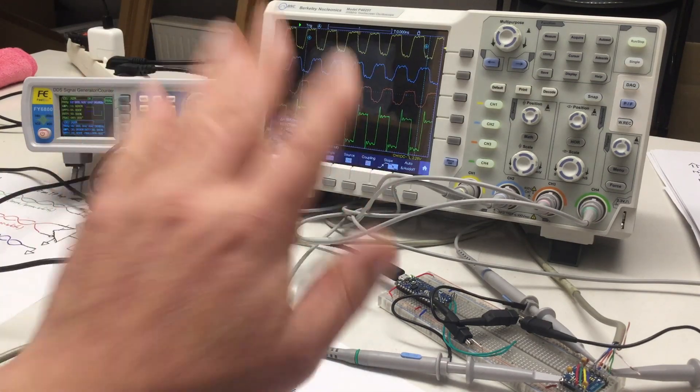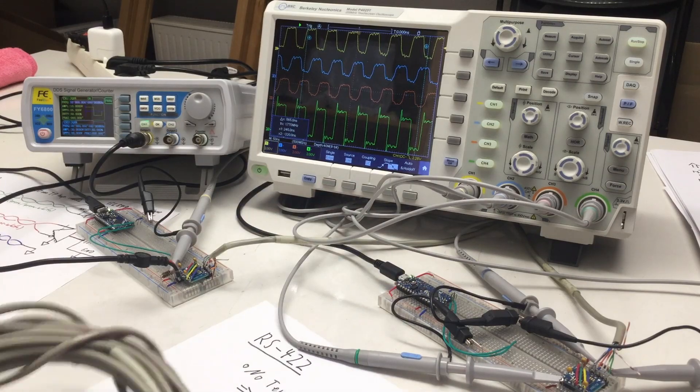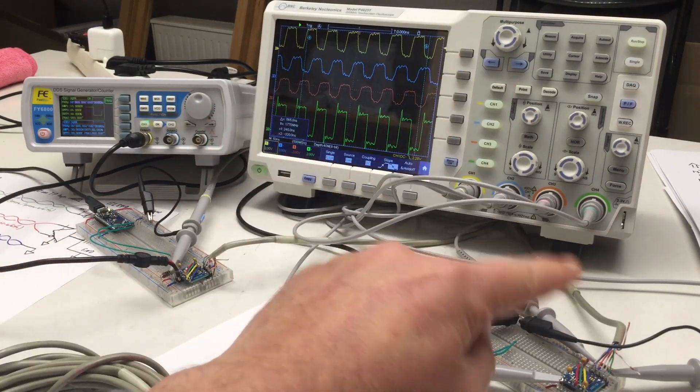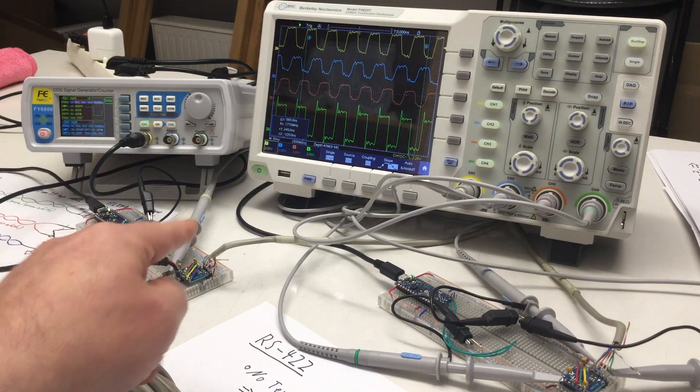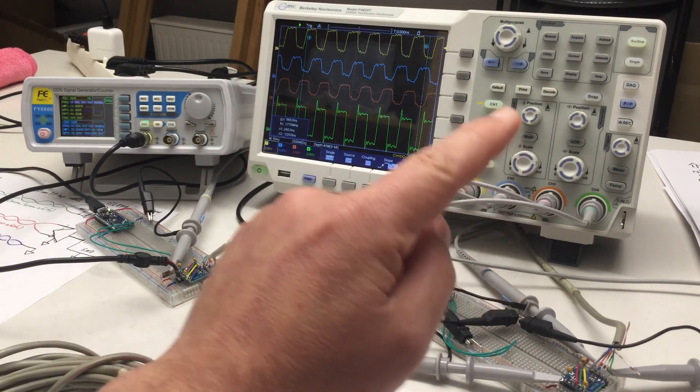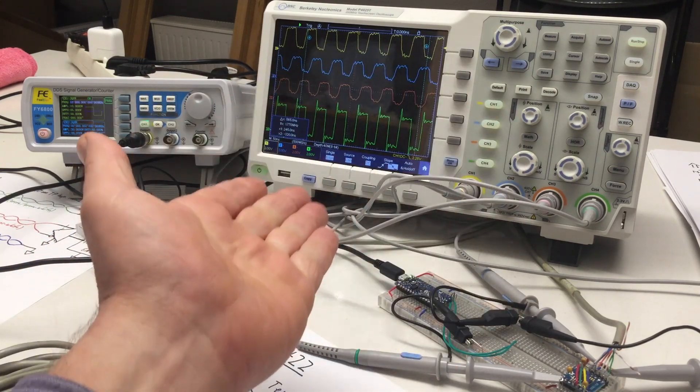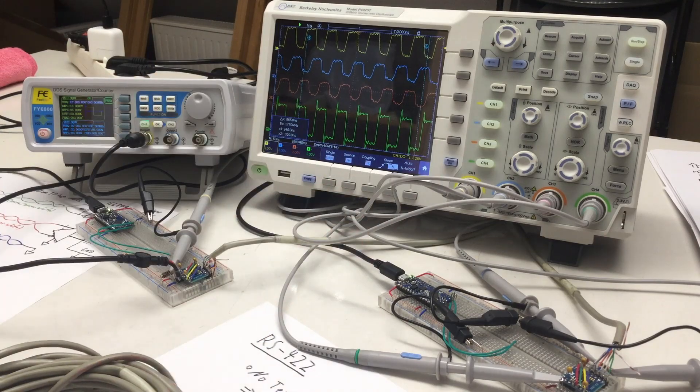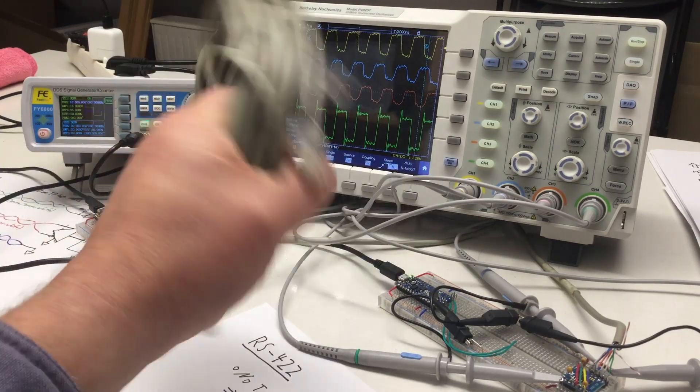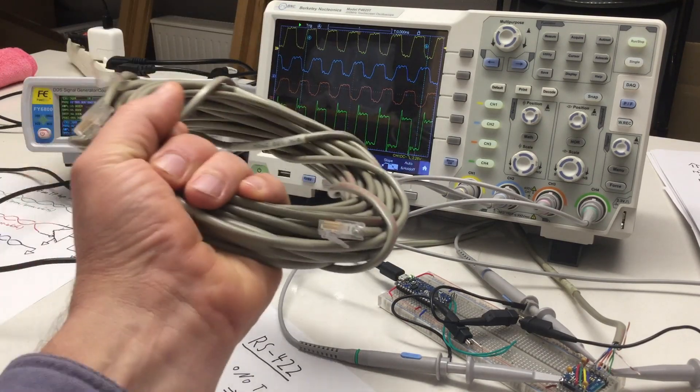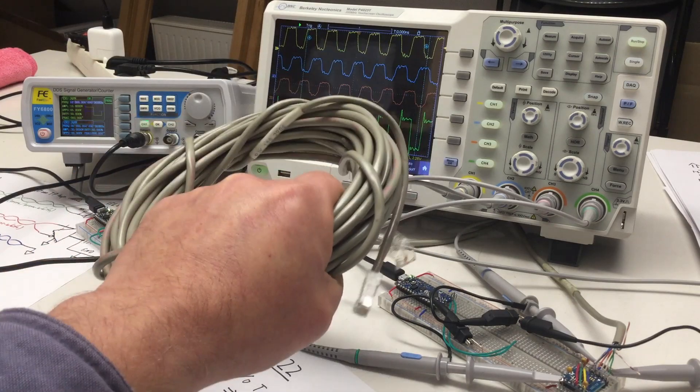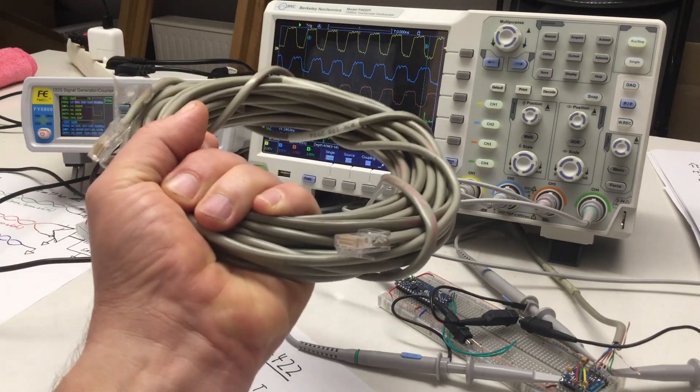In this part I want to cover point to multipoint connections. That is one transmitter sending data to several receivers, also called multi-drop sometimes. And I already have here another length of 10 meters of CAT3 twisted pair cable ready for demonstration purposes.